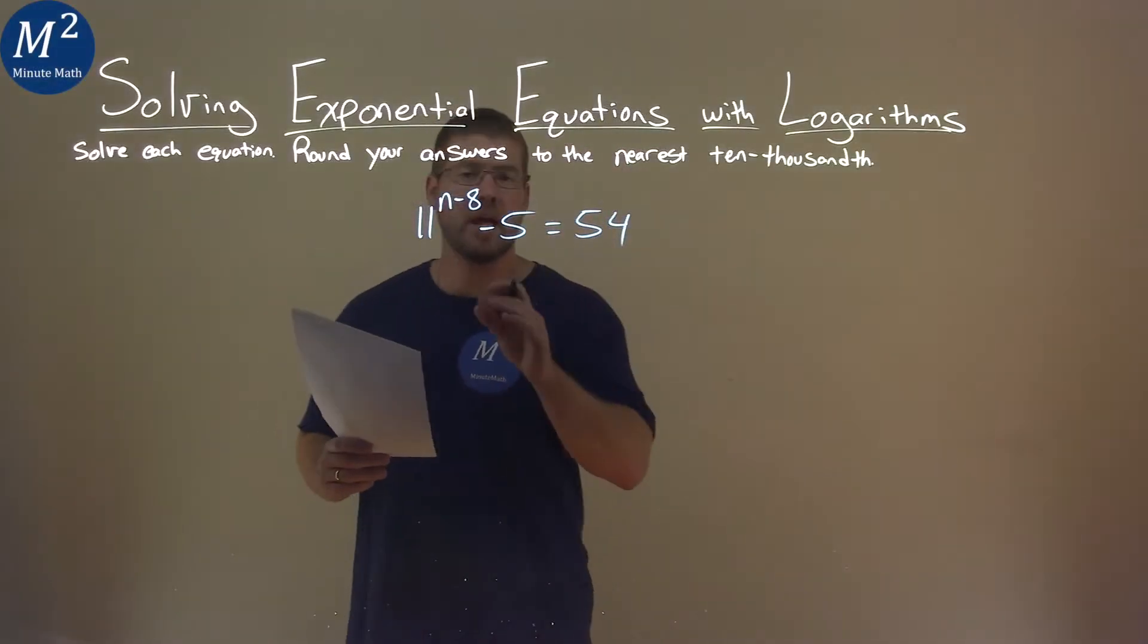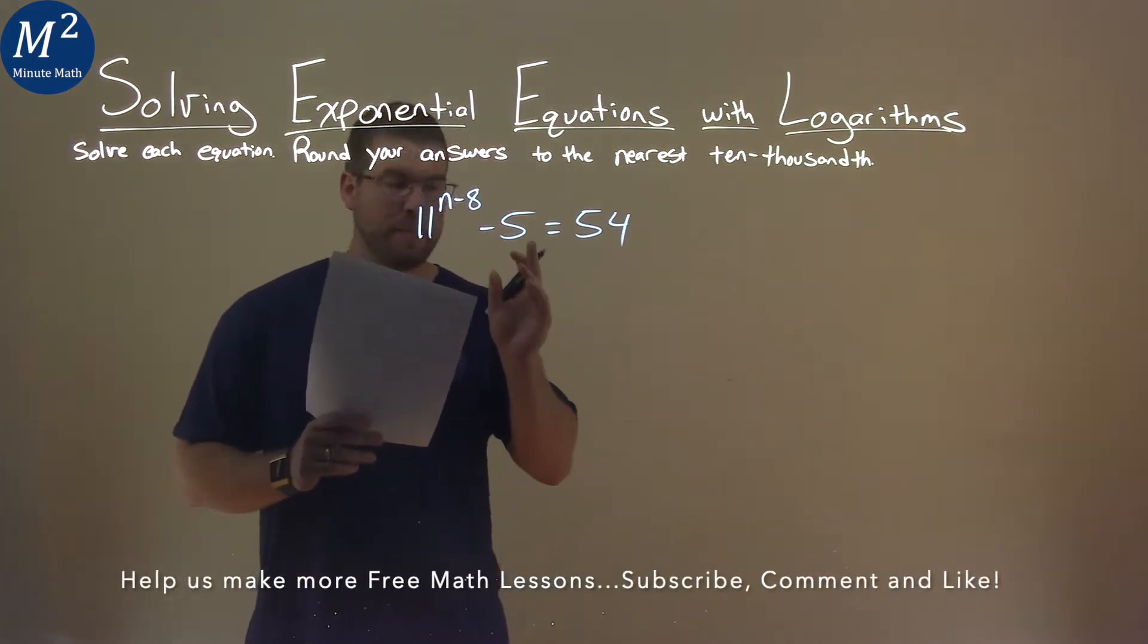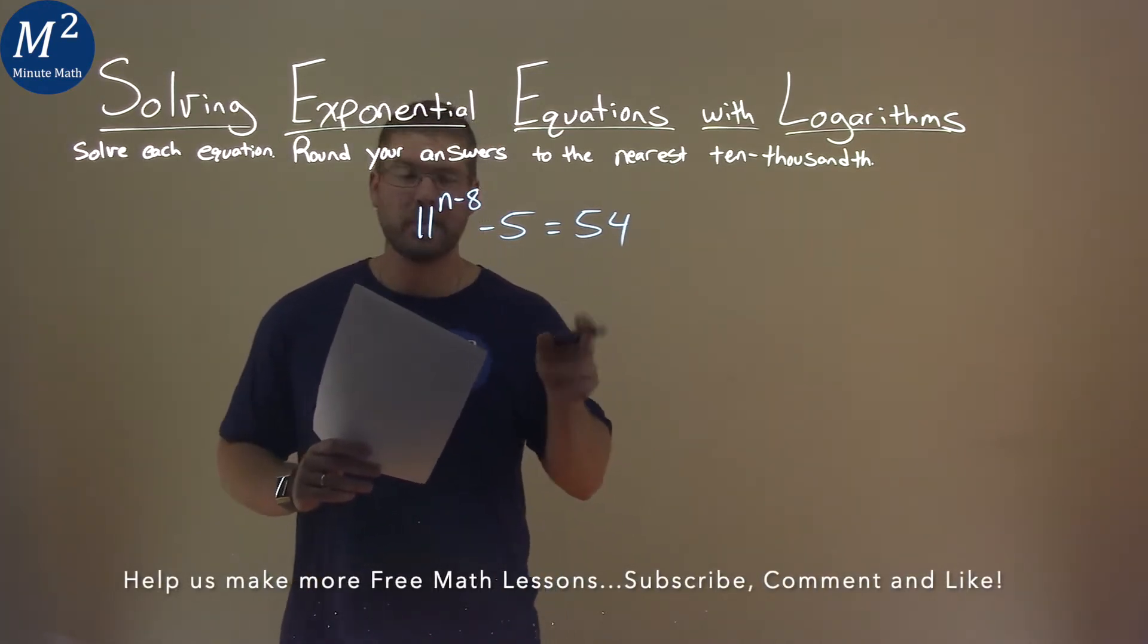We're given this problem right here, 11 to the n minus 8 power minus 5 equals 54, and we have to solve this equation.